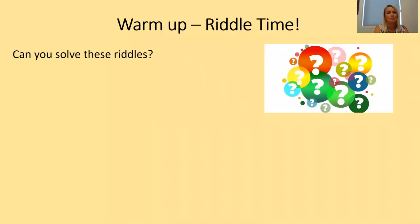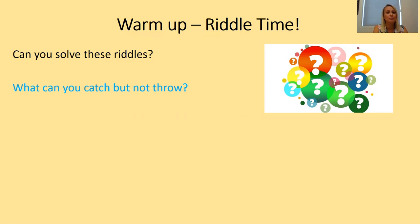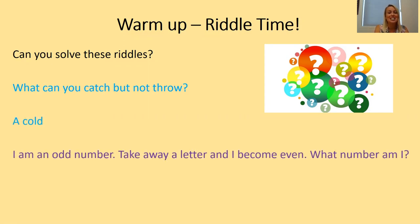Did you work out the answers to these riddles? What can you catch but not throw? A cold. And I am an odd number, take away a letter and I become even — what number am I? Seven. I wonder if I tricked any of you. We'll try again with some more riddles tomorrow.